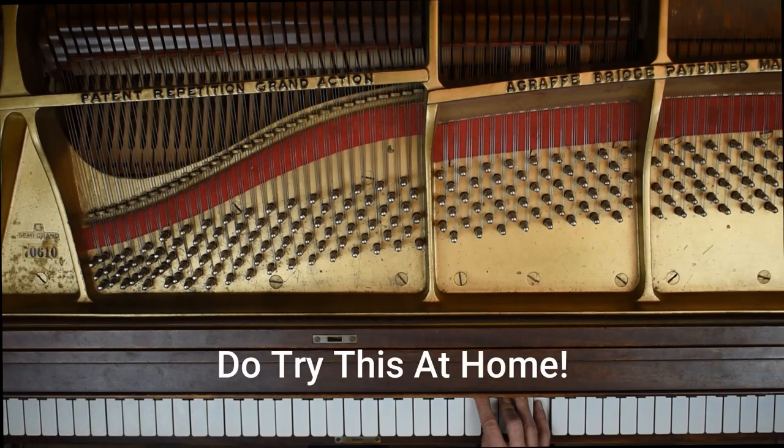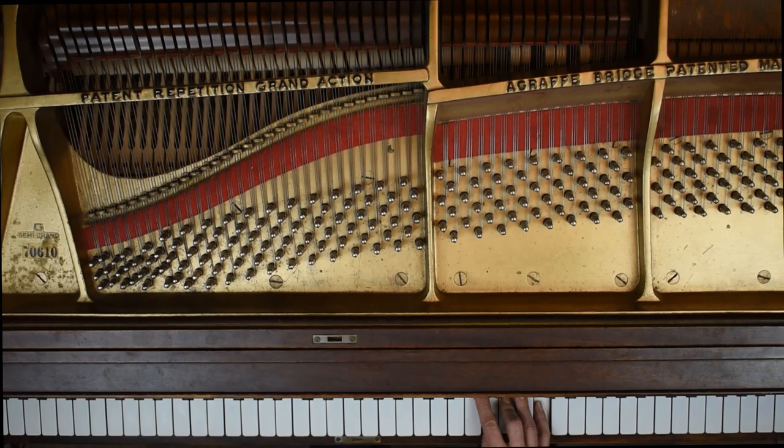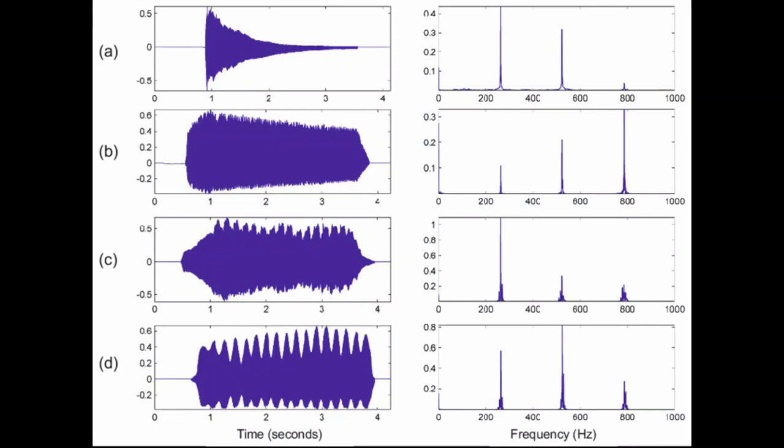For the color, or what we call timbre of a sound, two things are equally important: the envelope and the spectrum of harmonics and their amplitude.